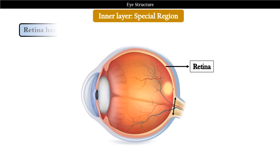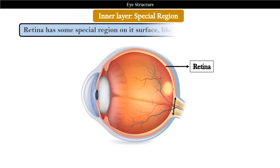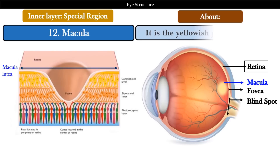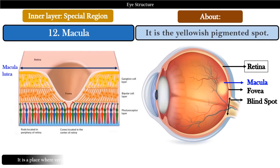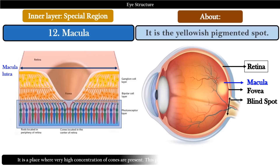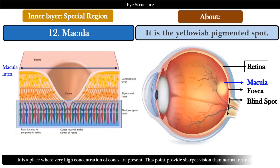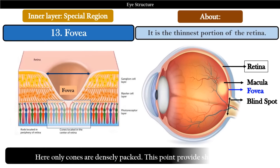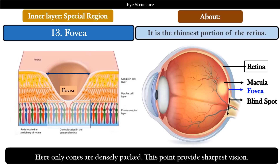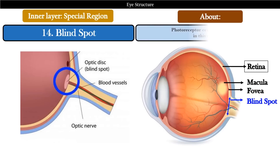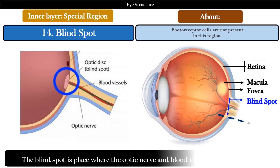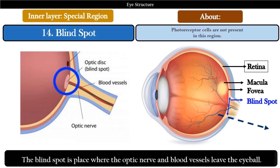The retina has some special regions on its surface, like macula, fovea, and blind spot. Macula is a yellowish pigmented spot where a very high concentration of cones are present — this point provides sharper vision than normal retinal vision. Fovea is the thinnest portion of the retina where only cones are densely packed, and this point provides the sharpest vision. The blind spot is the place where photoreceptor cells are not present — it is where the optic nerve and blood vessels leave the eyeball.